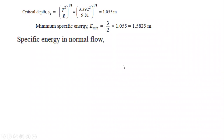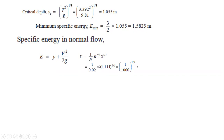For the normal depth, the specific energy E = y + V²/(2g). The depth y is given, but velocity V is not, so we use Manning's equation: V = (1/n) × R^(2/3) × S^(1/2). Substituting n = 0.02, R = 1.111^(2/3), and slope S = 1/2000, we get velocity V = 1.696 m/s. The specific energy at normal flow depth is E = 2 + (1.696²)/(2 × 9.81) = 2.147 m.